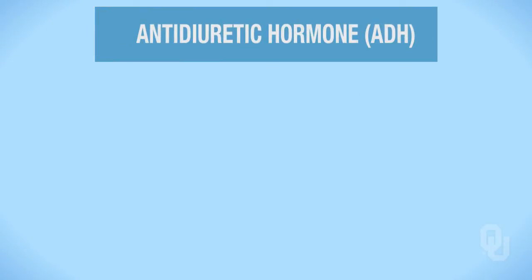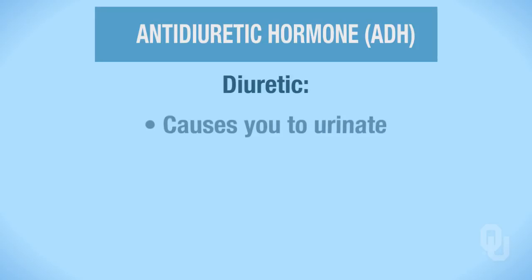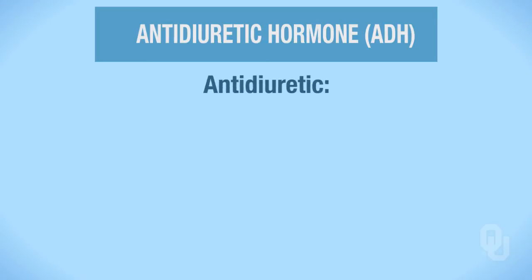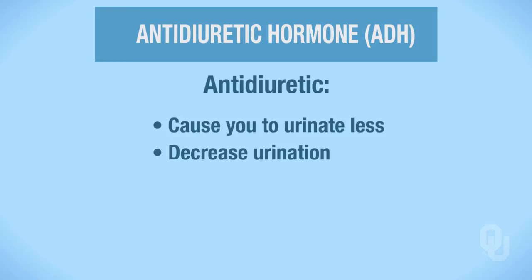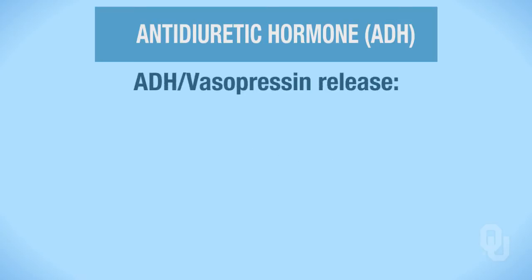ADH is a hormone that is often confusing to students based on its name. Think first about what a diuretic causes you to do. If you drink iced tea or coffee, you know those are diuretics — they cause you to urinate. So if it's antidiuretic, think about what the prefix anti- means: you're doing the opposite. Antidiuretic means you will urinate less, or have decreased urination. The function of antidiuretic hormone is to decrease urination.